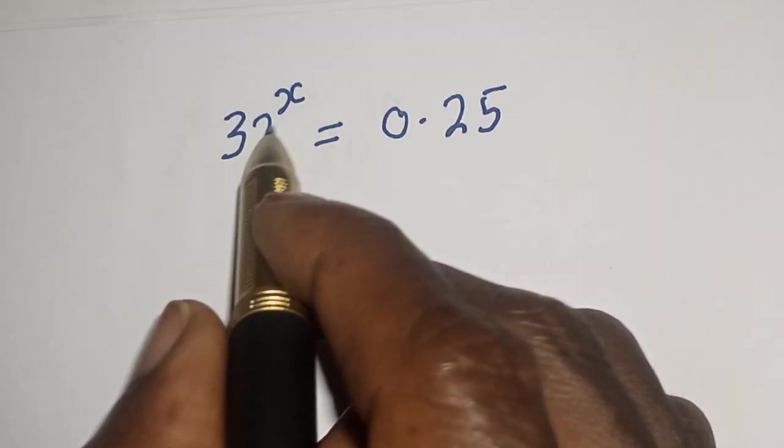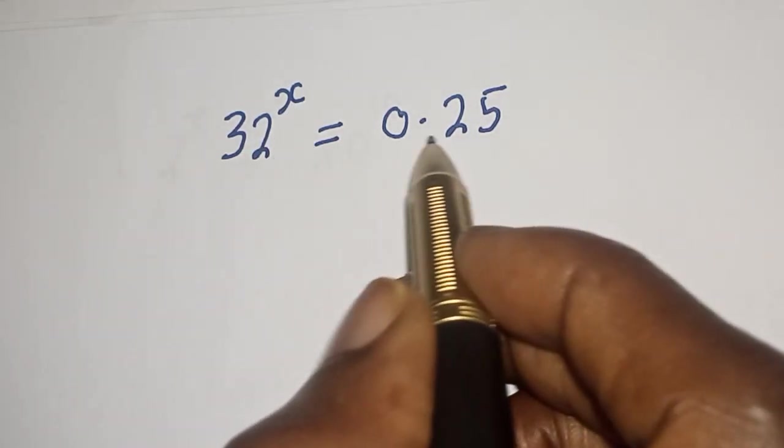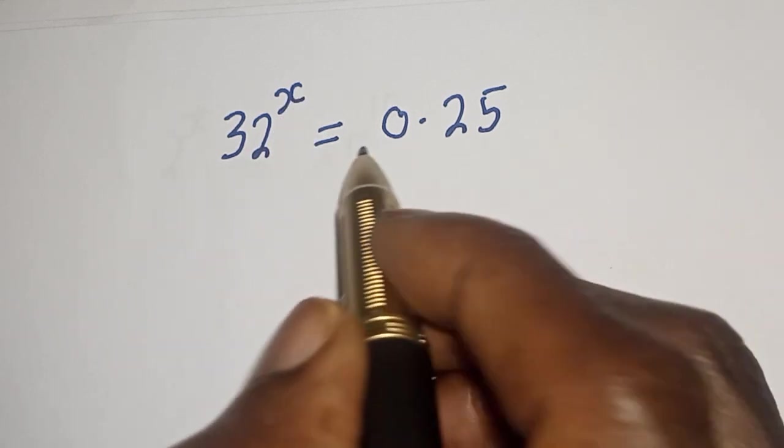Hello, welcome to Math G's. In this class we want to find the value of s from this equation: 32 raised to power s equals 0.25.